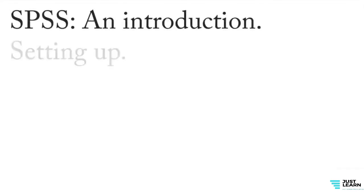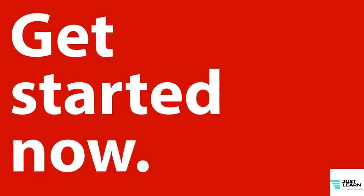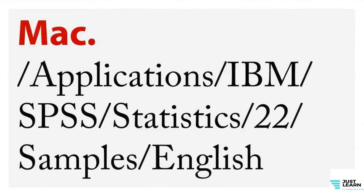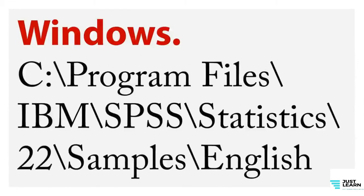We'll continue our introduction by taking a look at the sample data that comes as part of the SPSS application. The nice thing is it allows you to get started now and start working with things. The hard part is that it's totally hidden. If you're on a Macintosh, it's in your Applications folder under IBM SPSS Statistics 22 and then in English. On Windows, it's C:\Program Files\IBM\SPSS\Statistics\22\Samples\English.